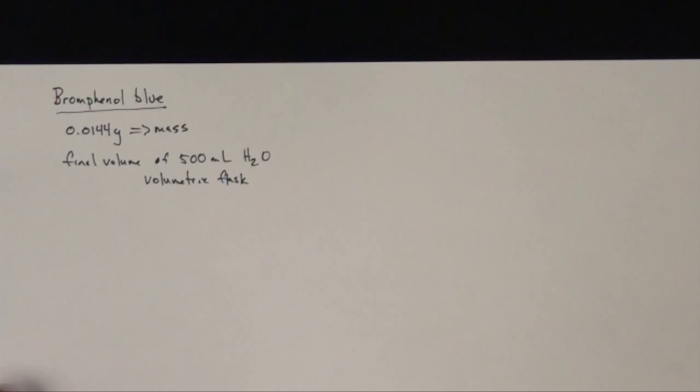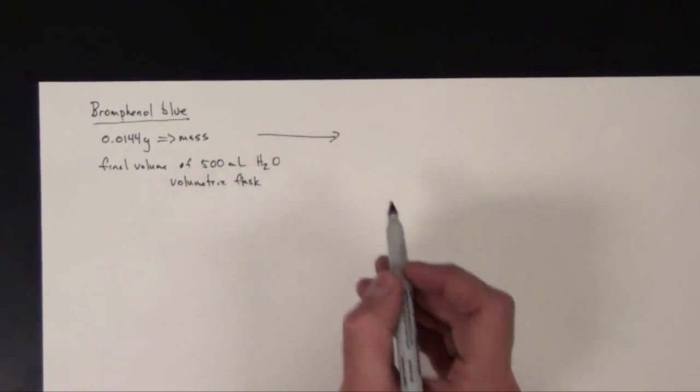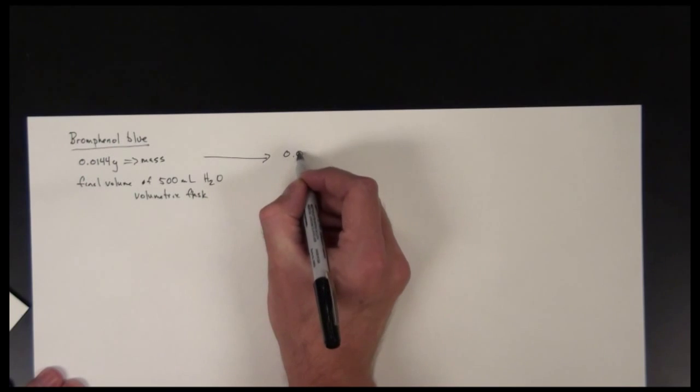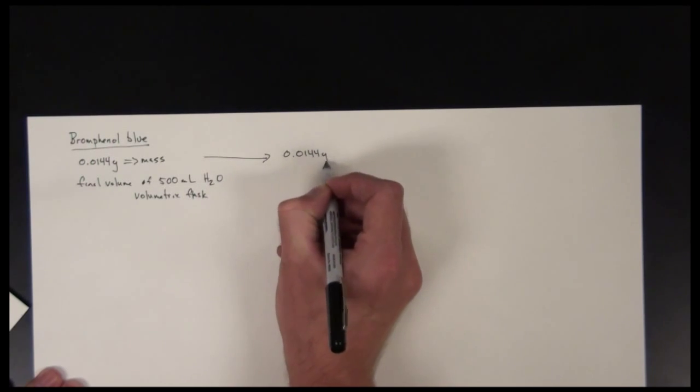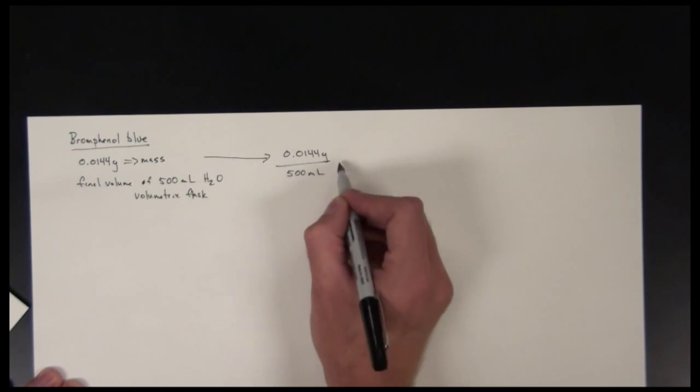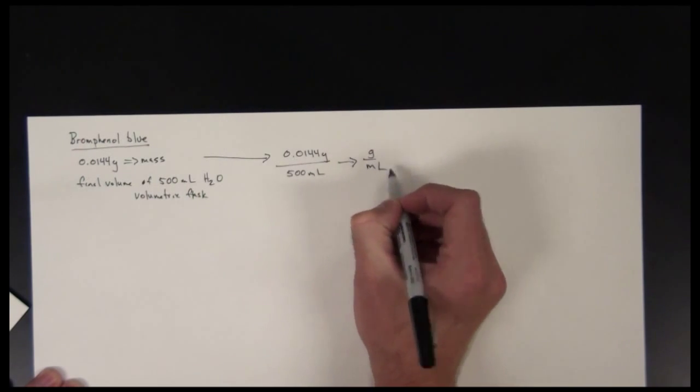So what we can start to do is refer to this chemical or this solution in terms of concentrations. The simplest way to communicate concentration in this particular case is mass per volume units. One of the simplest ways is to break this down into a simpler unit. If we know we have 0.0144 grams and we had a total volume of 500 mils, we can then make this into grams per mil.